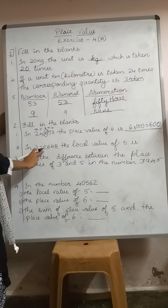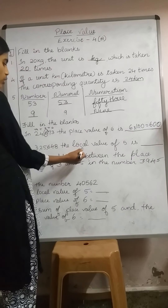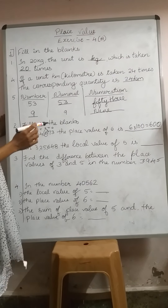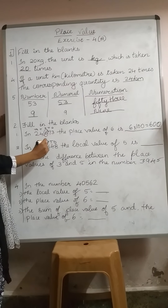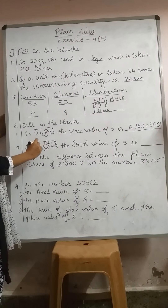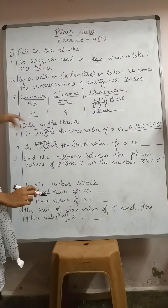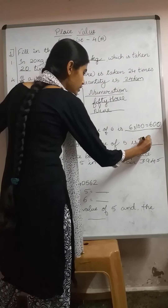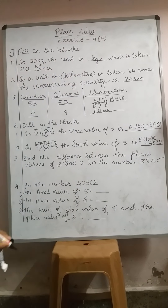Third, in 325,648, the local value of 5 is what? Local value means the same as place value — it is another name for it. Let us circle 5 and follow the positions: 1's, 10's, 100's, 1000's, 10,000's, lakhs. 5 is at the 1000's place, so the place value of 5 equals 5 times 1000 equals 5,000.